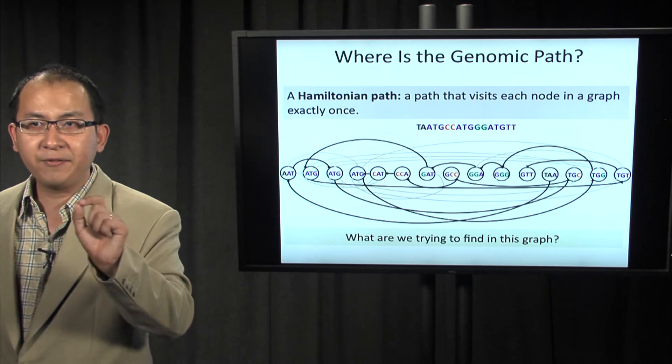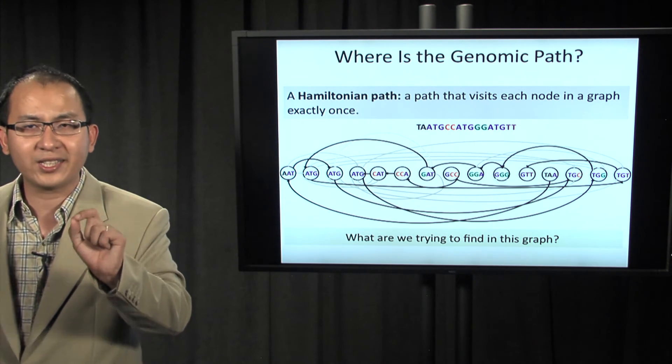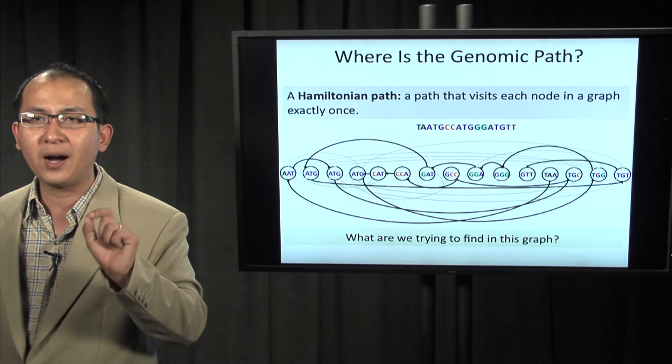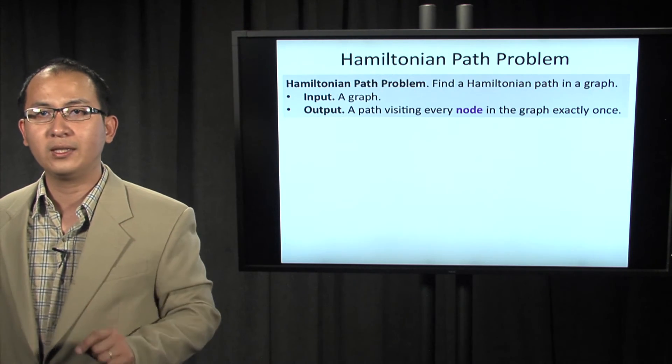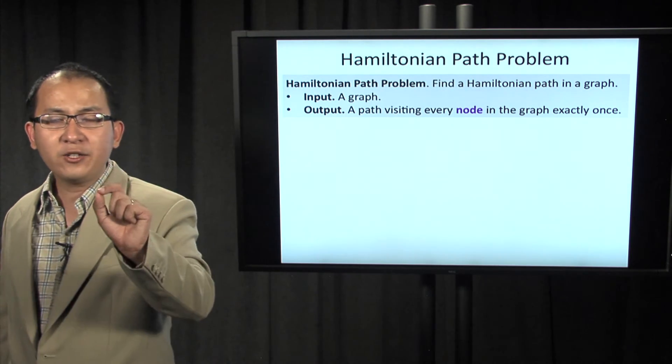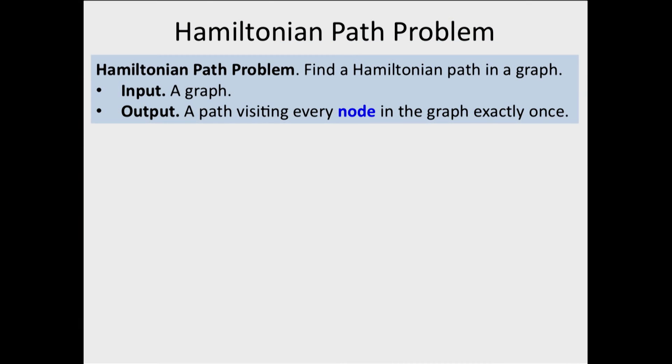We call a path that visits each node in a graph exactly once a Hamiltonian path. The Hamiltonian path problem is: for a given graph, find a path that visits every node exactly once.